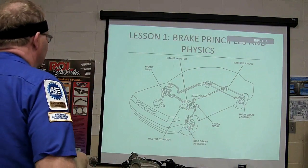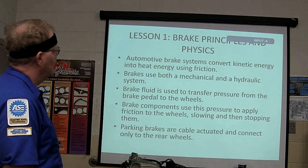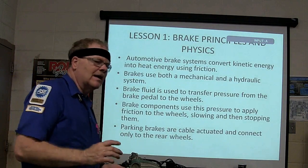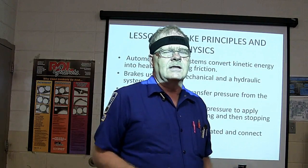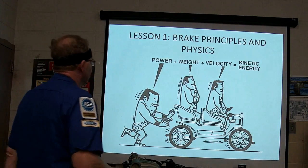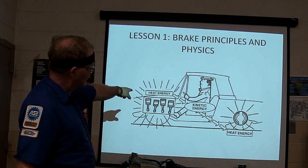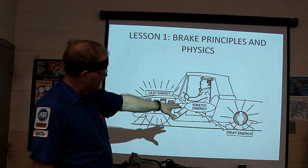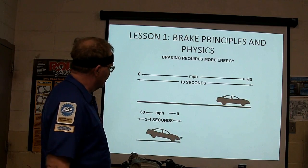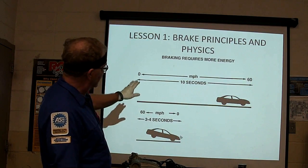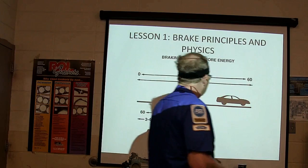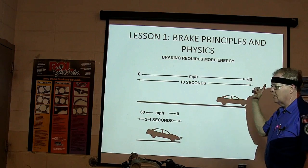Brake principles in physics — everybody knows about these parts here. Kinetic energy is the energy of motion. Heat energy is the energy of friction. Whenever you hit the brake, you're taking the motion energy of the car going along and converting it to heat energy, and that's what stops the car. Heat energy is being produced by your engine while you're driving, delivering power to the wheels as kinetic energy. It takes a lot more energy to stop you than it does to get you going — zero to 60 in 10 seconds, 60 to zero in three to four seconds.